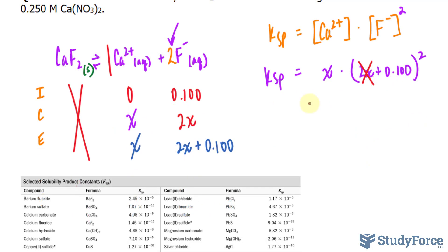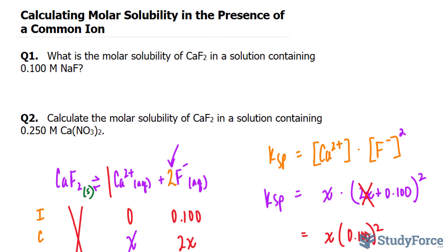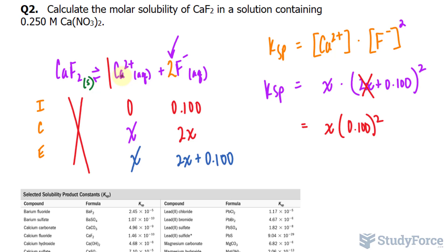On the right side of this expression, we have X times 0.100 raised to the power of 2. We're looking for X because at the end of the day, we want the concentration of calcium and, of course, the concentration of fluoride.